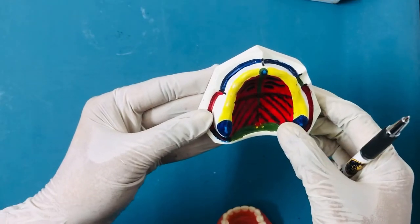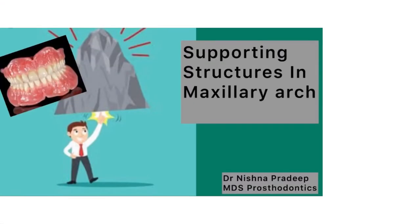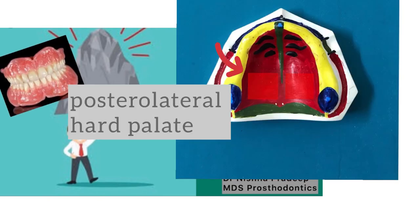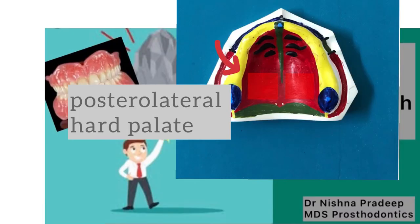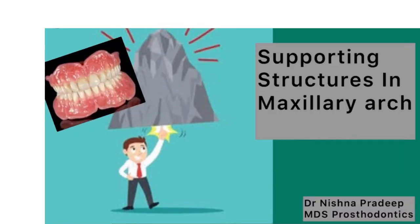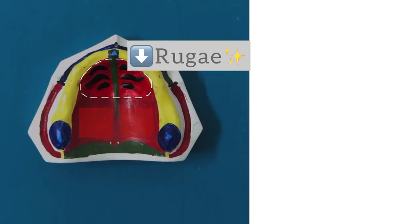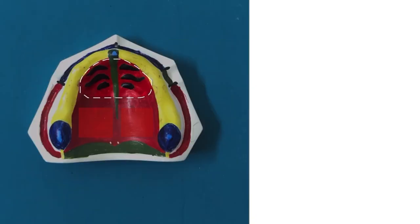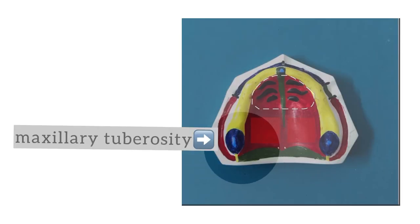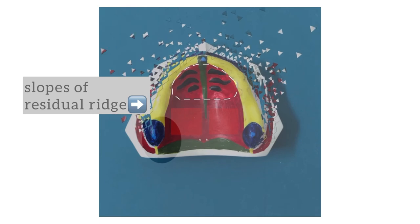To wind up today's class: we saw the supporting structures in the maxillary arch under two categories. The best support is provided by the primary stress bearing area — the posterolateral aspect of the hard palate. The secondary stress bearing areas are the rugae area, the maxillary tuberosity, and the slopes of the residual alveolar ridge.